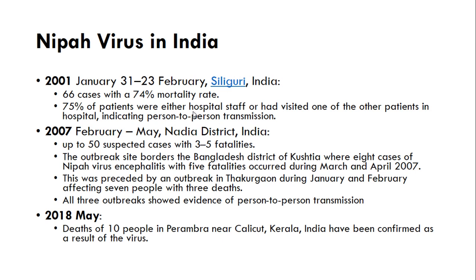Nipah virus is not new to India. In 2001 there were 66 cases with a 74% mortality rate, and 75% of patients were either hospital staff or had visited the hospital, meaning person-to-person transmission was the main factor. In February 2007 it was seen in Nadia district with 50 suspected cases and three to five fatalities. In 2018 in May in Kerala, 10 cases were identified. All three outbreaks showed evidence of person-to-person transmission.